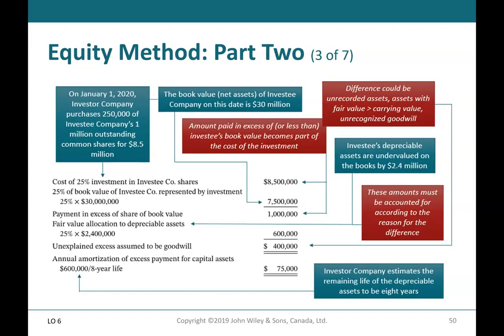Equity Method Part 2 (3 of 7): The cost of a 25% investment in InvestiCo shares is $8.5 million. 25% of InvestiCo's book value (net assets of $30 million) is $7.5 million, so the difference of $1 million is the payment in excess of the share of book value. The fair value allocation to depreciable assets is $2.4 million at 25%, equaling $600,000, with the remaining $400,000 assumed to be goodwill. Annual amortization of the excess payment for capital assets is $600,000 divided by 8 years, yielding $75,000 per year.